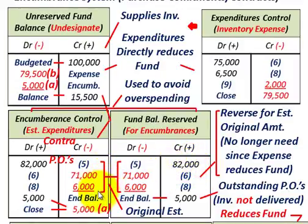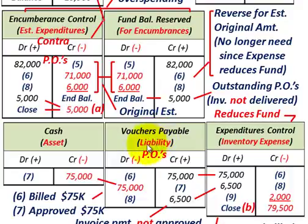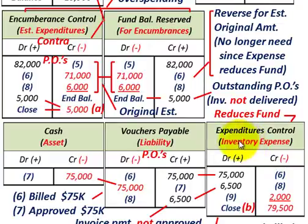Now we're going to get billed and receive some of those purchase orders. This ties into our vouchers payable — the liability account for those purchase orders we issued. Along with vouchers payable, the expenditures control account comes into play. The expenditures control account for inventories is an expense item that is going to directly reduce the fund balance.